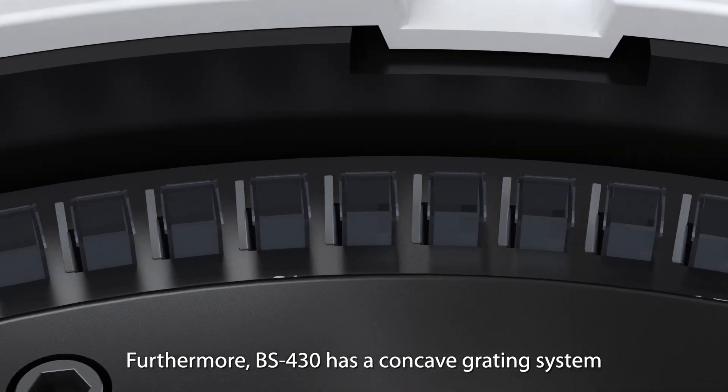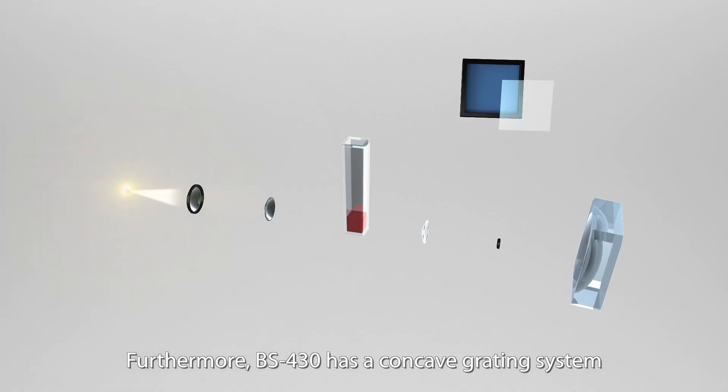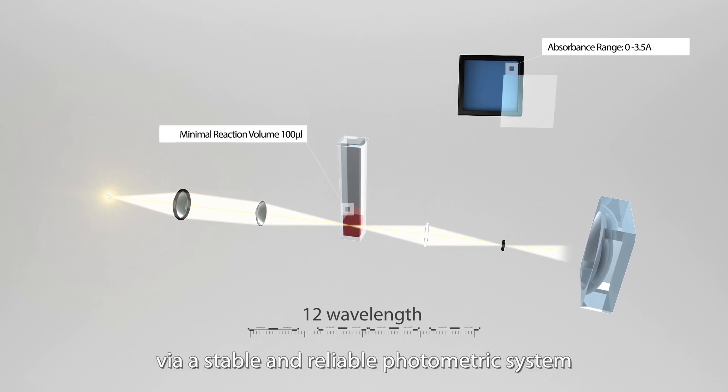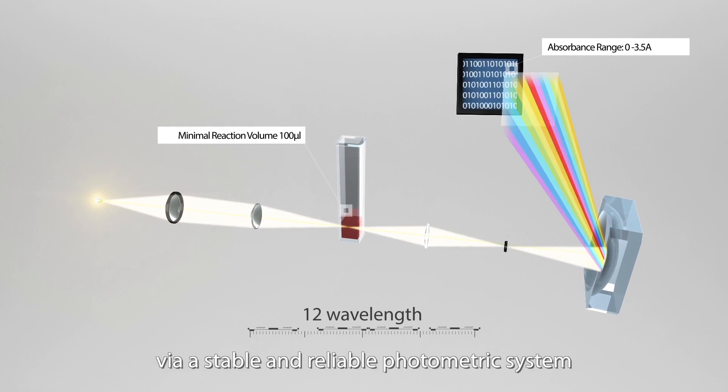Furthermore, BS430 has a concave grading system, providing 12 wavelengths, and ensuring accurate results via a stable and reliable photometric system.